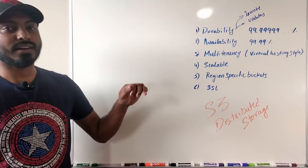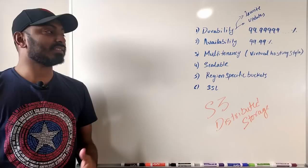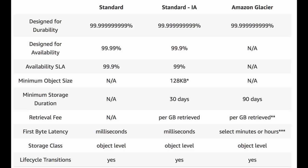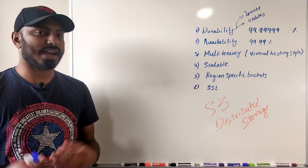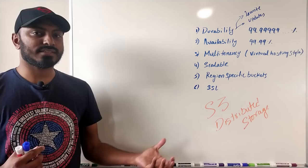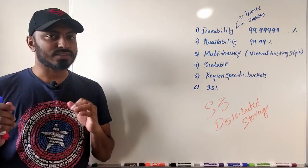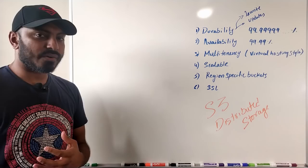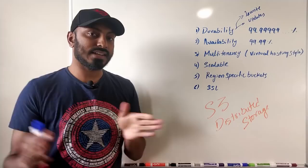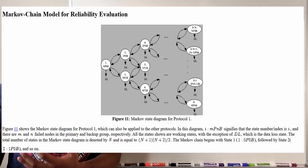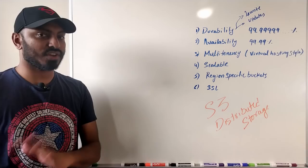The first goal is durability. AWS S3 says they give durability of 99.9999 — 11 nines — meaning it is highly durable. When you write a file into their system, most likely you will never lose that file; it is always present and accessible. They calculate this using the Markov chain algorithm, also called reliability analysis using Markov chains.